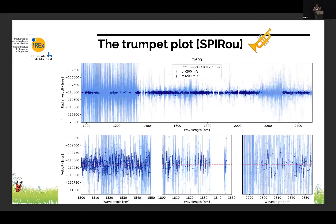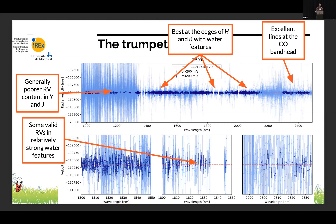I hope I'm not the only one seeing a trumpet here — that's what we call the trumpet plot. For Barnard's star, which we all love, it's a plot of 16,000 lines, each with a velocity and error bars, color-shaded by quality. The very best lines are about 50 meters per second per line. You can see that H band is better in terms of RV content, with more good-quality lines, fewer in Y and J bands. The CO band head at 2.3 micron is extremely good — a really dense forest of high quality lines.